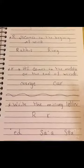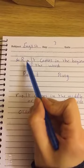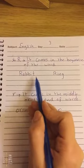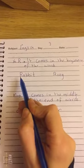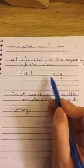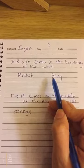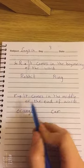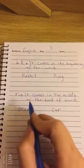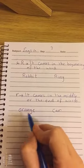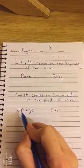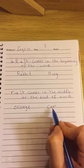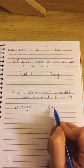The R sound comes in the beginning of words. For example: rabbit — our capital letter R comes in the beginning of this word. Ring — our capital letter comes in the beginning of this word. But our small letter r comes in the middle or the end of words. For example: orange — our small letter comes in the middle. Car — our small letter comes at the end.